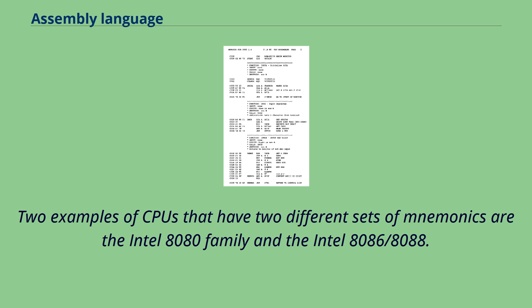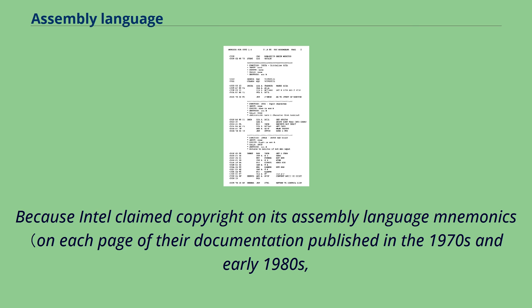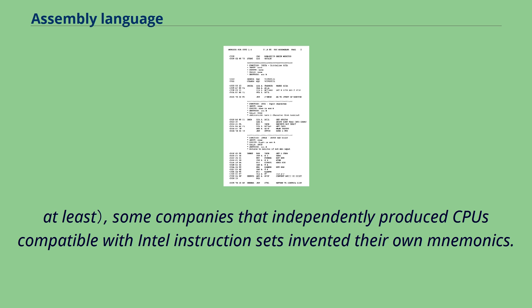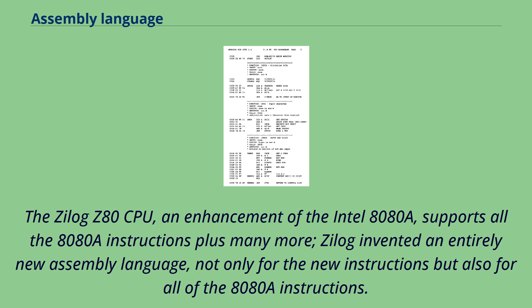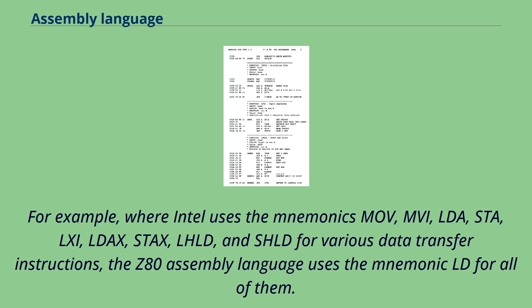Two examples of CPUs that have two different sets of mnemonics are the Intel 8080 family and the Intel 8086/8088. Because Intel claimed copyright on its assembly language mnemonics on each page of their documentation published in the 1970s and early 1980s, at least some companies that independently produced CPUs compatible with Intel instruction sets invented their own mnemonics. The Zilog Z80 CPU, an enhancement of the Intel 8080A, supports all the 8080A instructions plus many more. Zilog invented an entirely new assembly language not only for the new instructions but also for all of the 8080A instructions. For example, where Intel uses MOV, MVI, LDA, STA, LXI, LDAX, STAX, LHLD, and SHLD for various data transfer instructions, the Z80 assembly language uses the mnemonic LD for all of them.